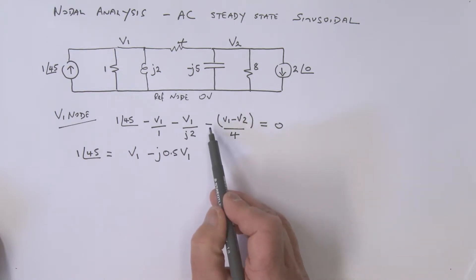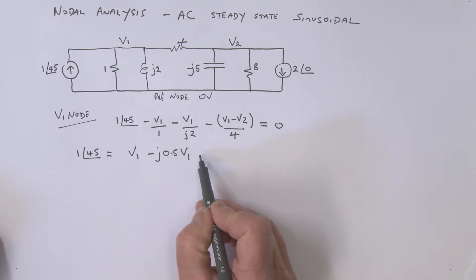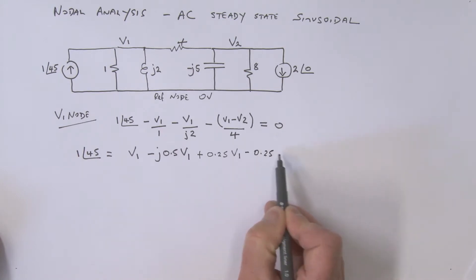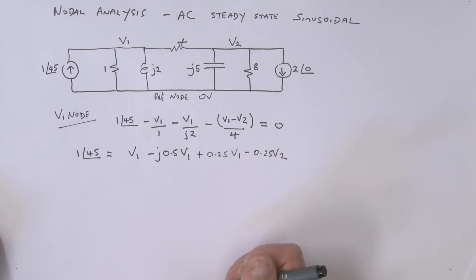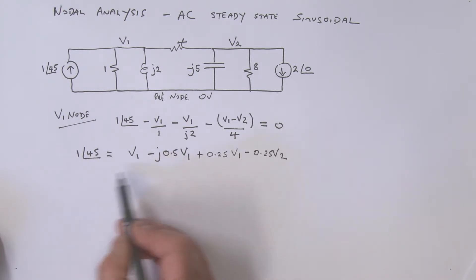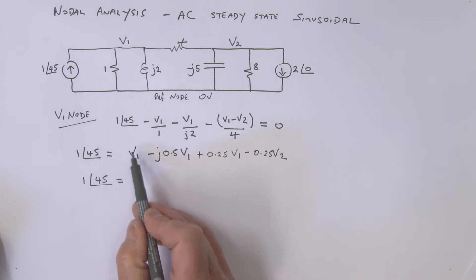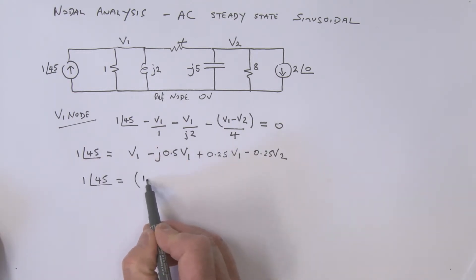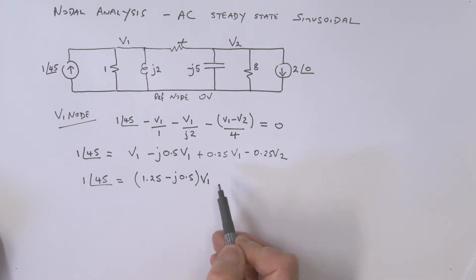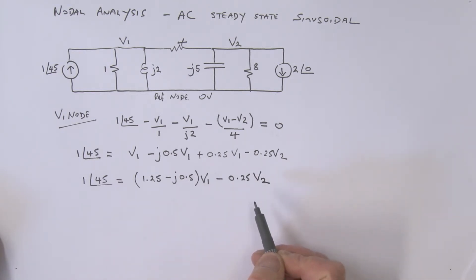Multiplying out the resistor term and taking it to the other side gives plus 0.25 v1 minus 0.25 v2. Collecting the v1 terms together: 1 at 45° equals (1 + 0.25 − j0.5) v1 minus 0.25 v2, which is (1.25 − j0.5) v1 minus 0.25 v2.